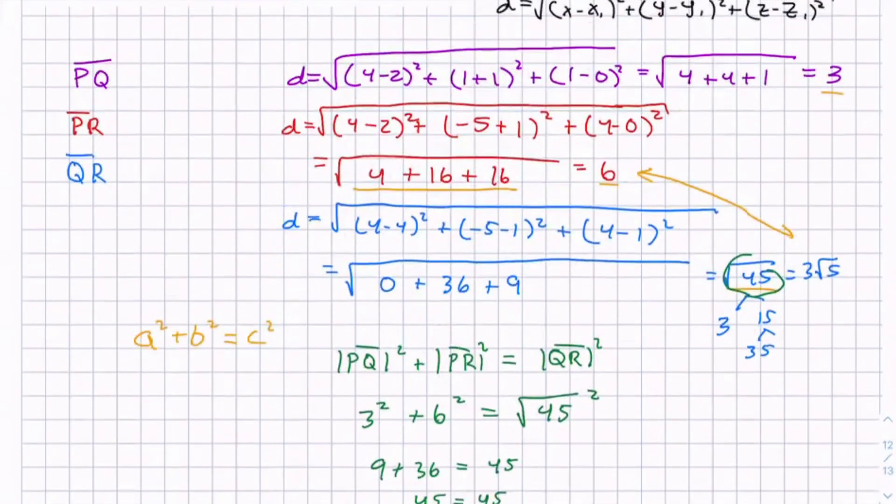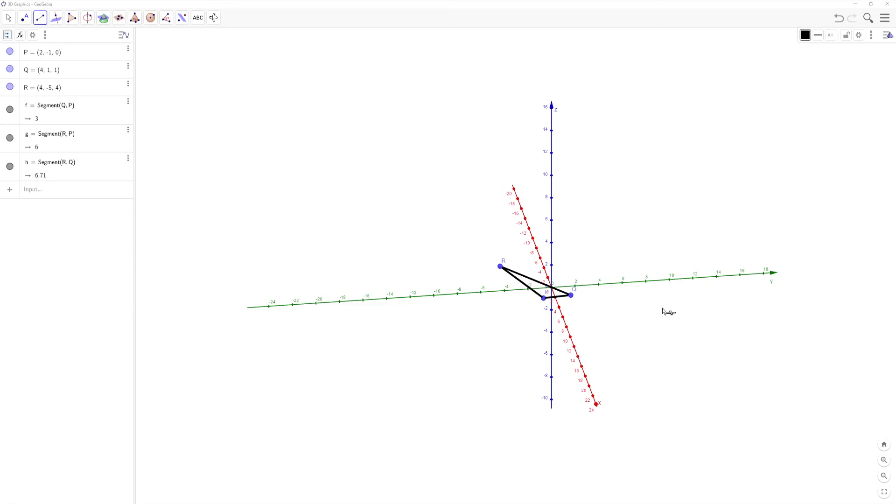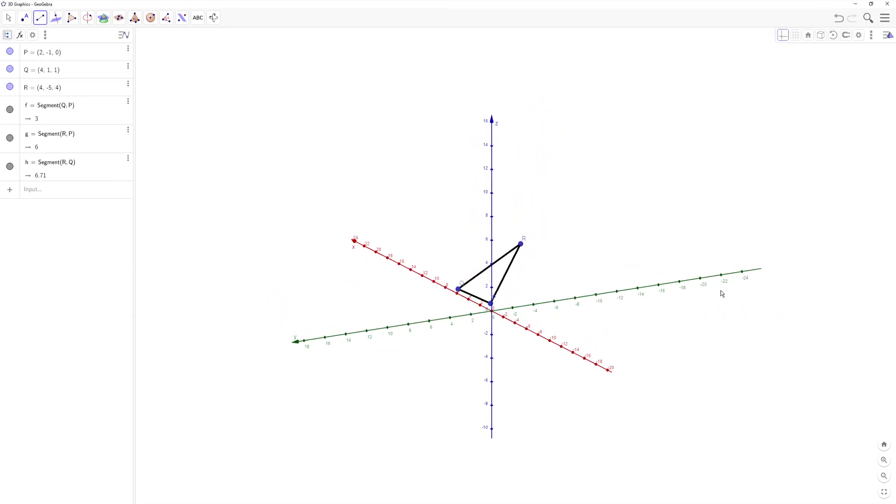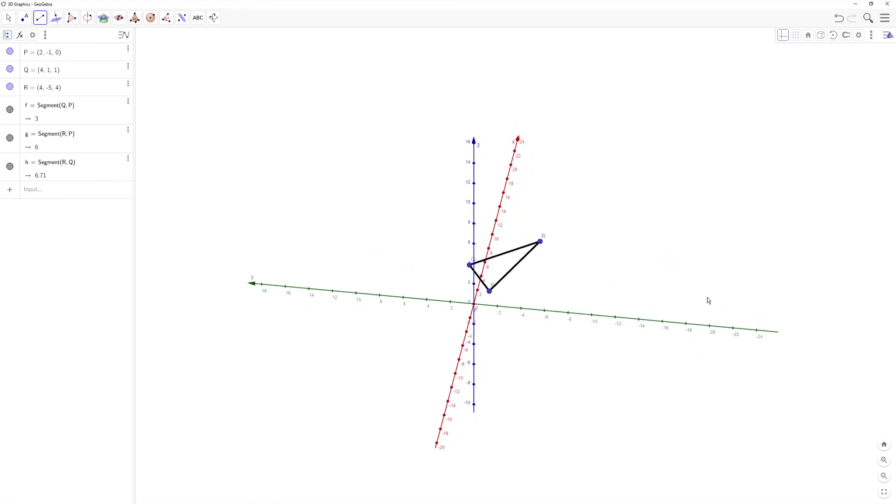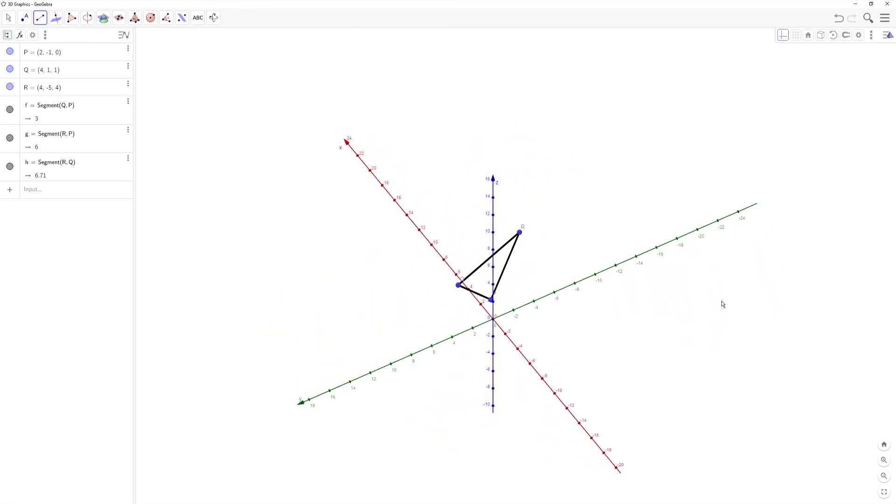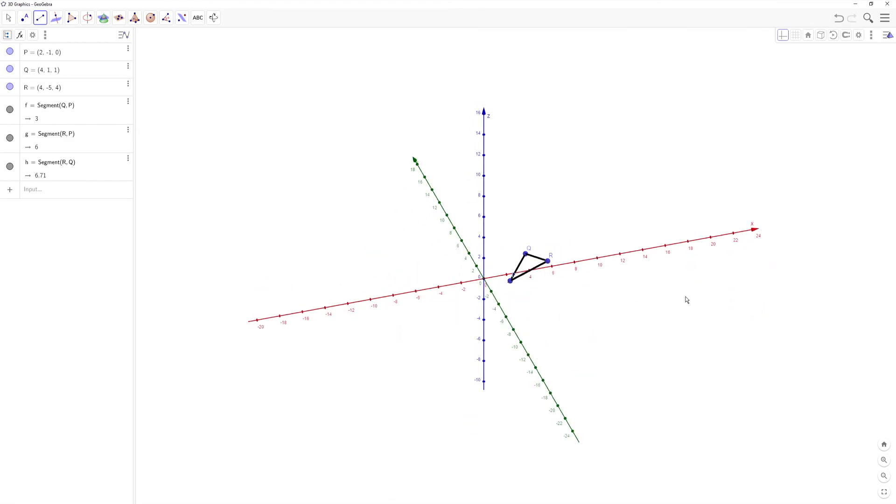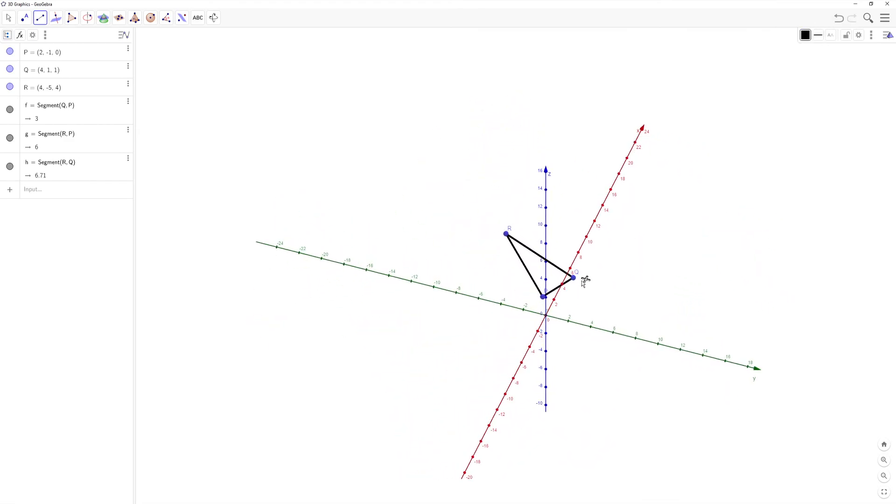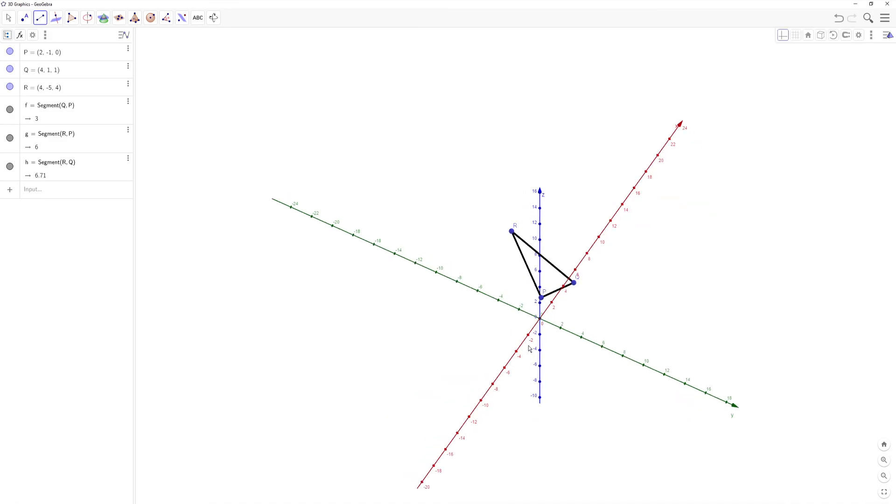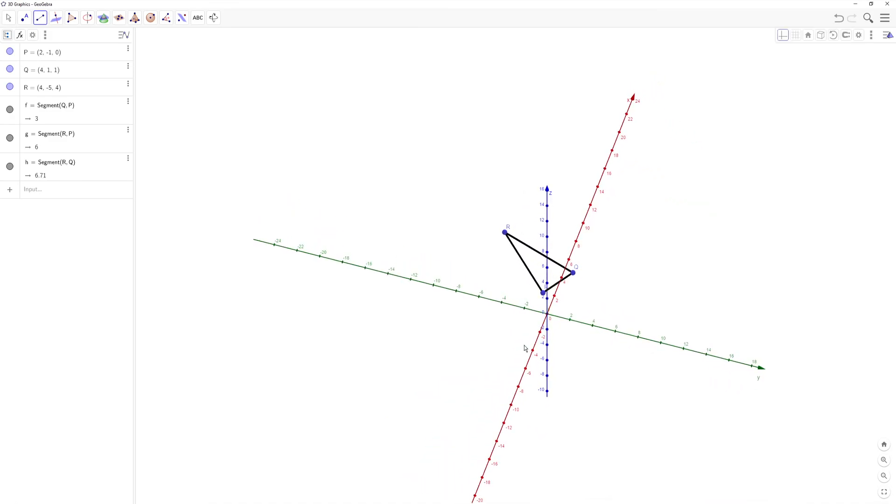And we can look at the graph, the 3D graph of this, to prove it—not prove it, but to visualize it. We just proved it. So let me go over to my grapher. And as you can see, we have this triangle. And you can see that QR is the hypotenuse, while PQ and PR are the legs. You can kind of see the right triangle right here. It's hard to get in the perfect view, but we do have a right triangle, and the right angle's right here. Thank you so much.